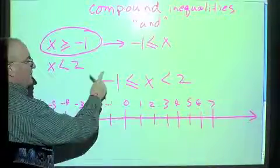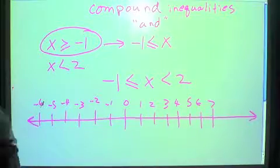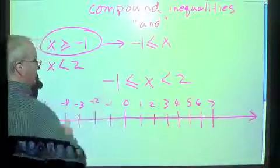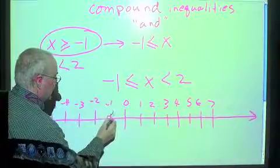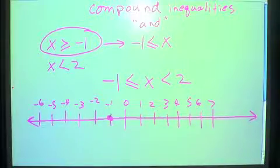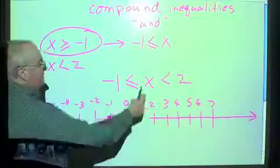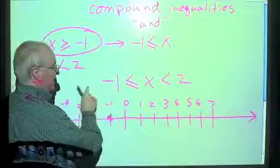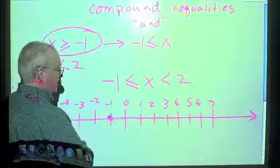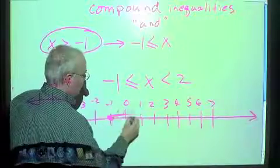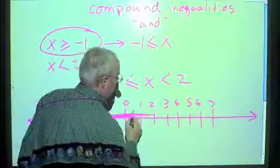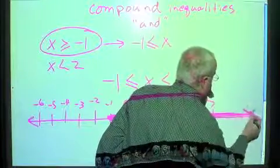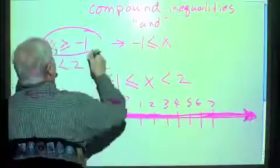Now, negative 1 — what are we going to do with the negative 1? Are we going to put a solid circle on it or an open circle? We've got an equals here, so x is going to be equal to negative 1, so we put a solid circle right there. This also says that x is bigger than negative 1, so everything over here goes this way. That's the first part of it.